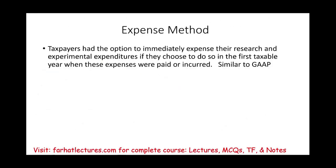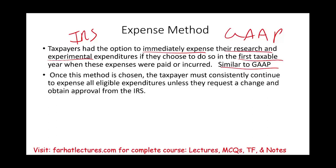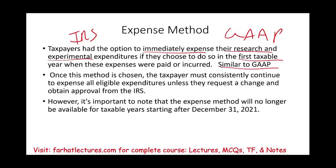Just to quickly revisit the expense method: the reason I'm going over it is to remind you that the way IRS accounts for certain expenditure differs from GAAP. It used to be the same — taxpayers had the option to immediately expense research and experimental expenditure in their first taxable year, which was similar to GAAP. Once this method was chosen, you would have to use it consistently. However, this method is no longer available.